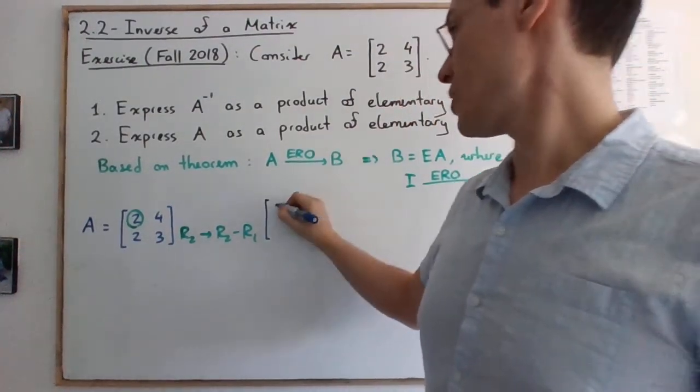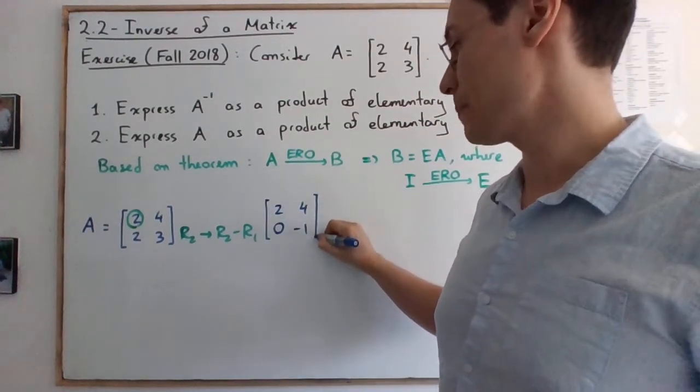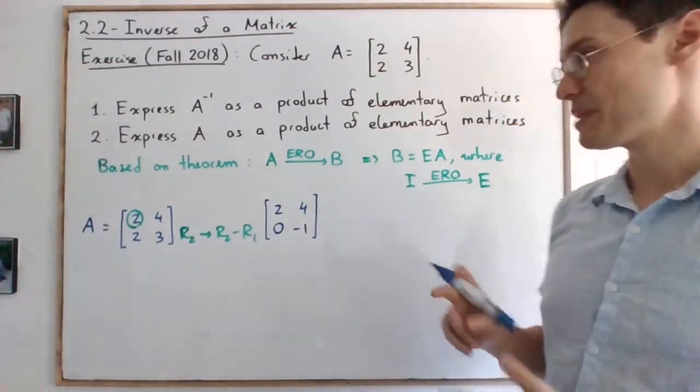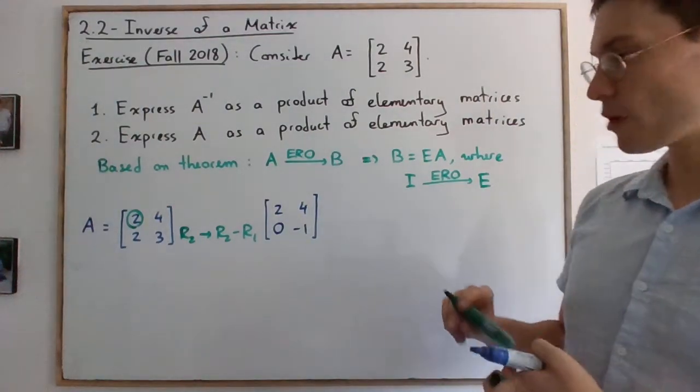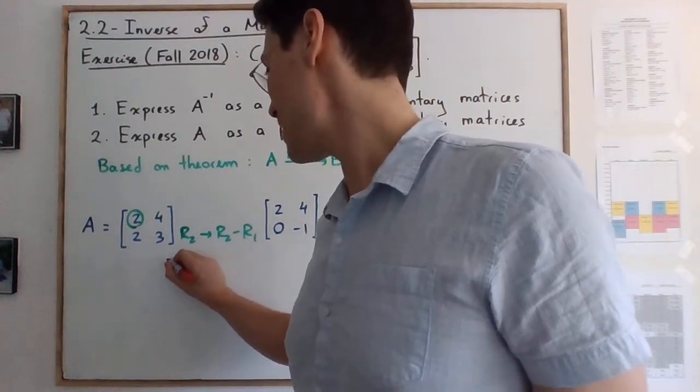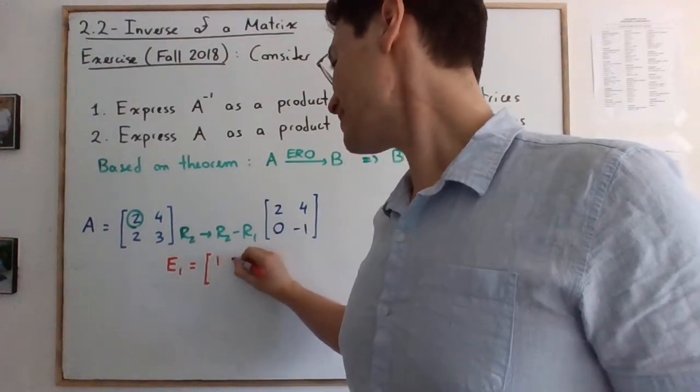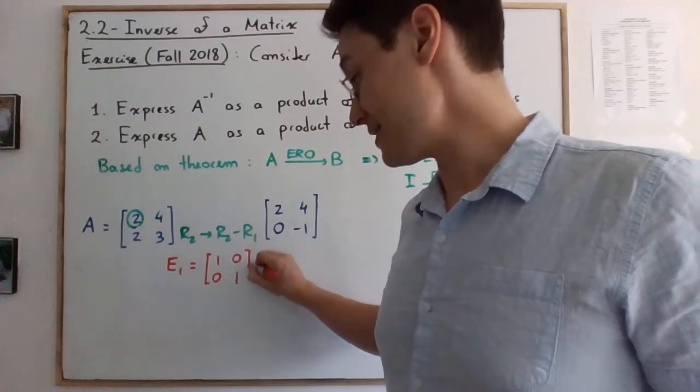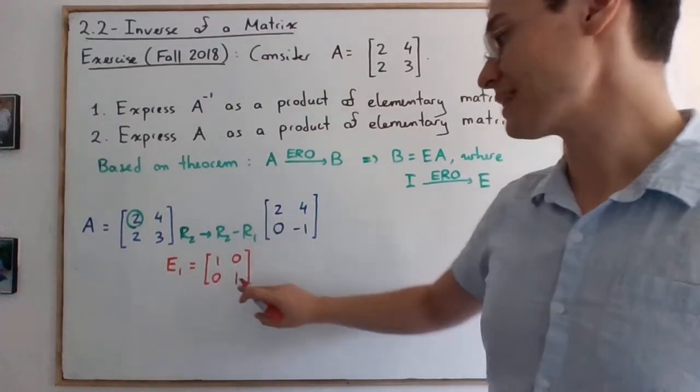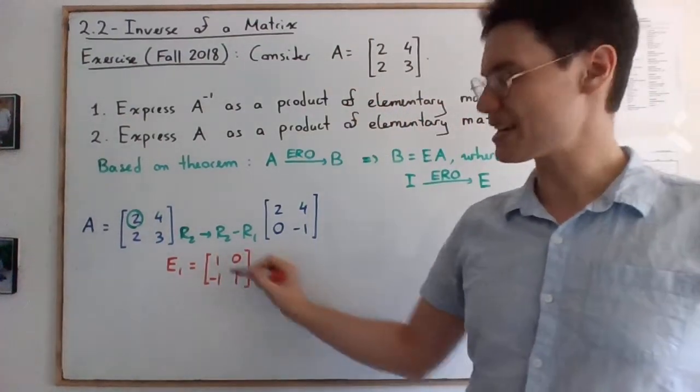Okay, so this doesn't change. And now we have 0 and negative 1. Here the elementary matrix is actually easy to write because the only thing you need to do is to perform this row operation on the identity matrix. So let's write the elementary matrices in red. I will call this E1. And remember, the identity matrix is this. And then we're performing row 2 minus row 1. So this is the first elementary matrix.